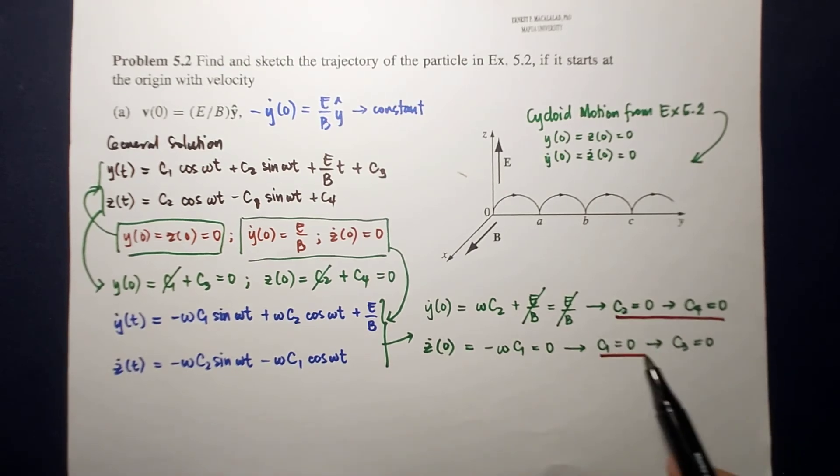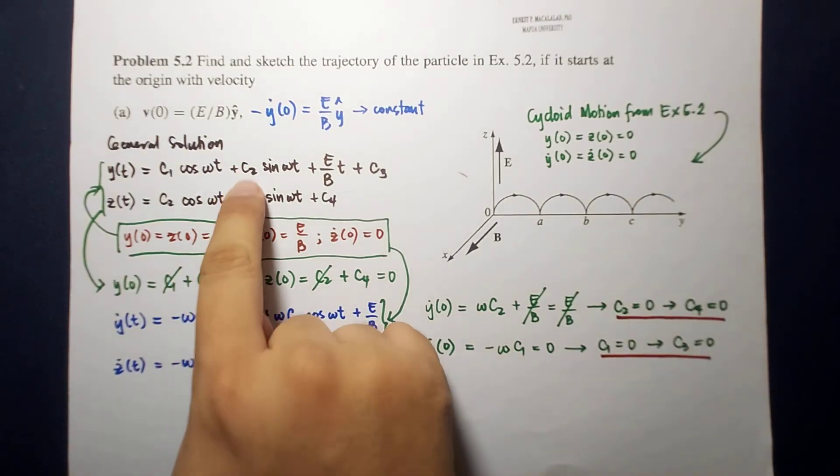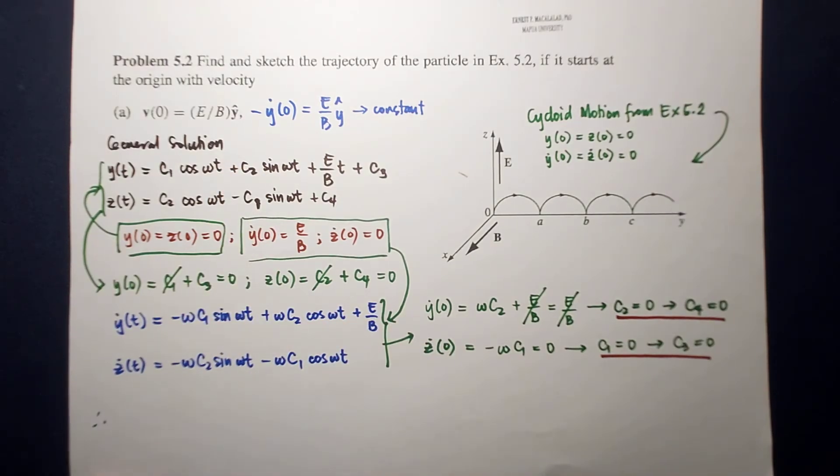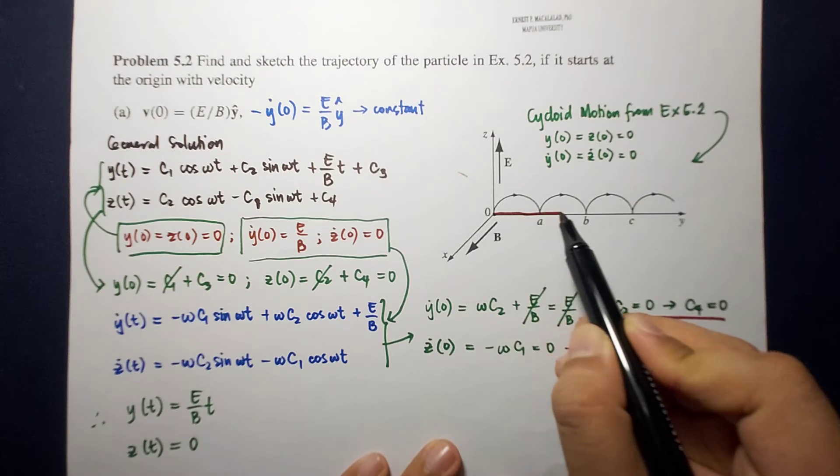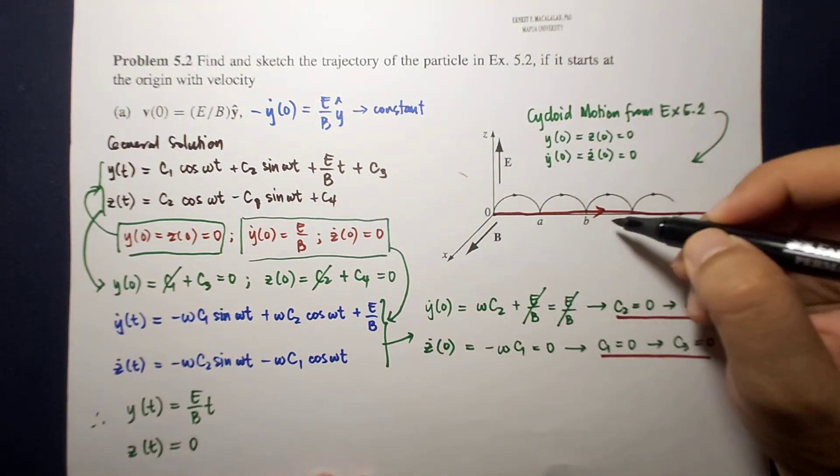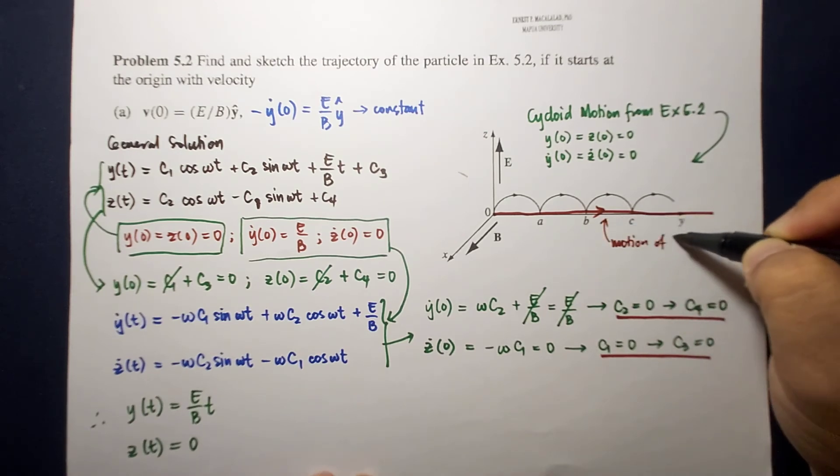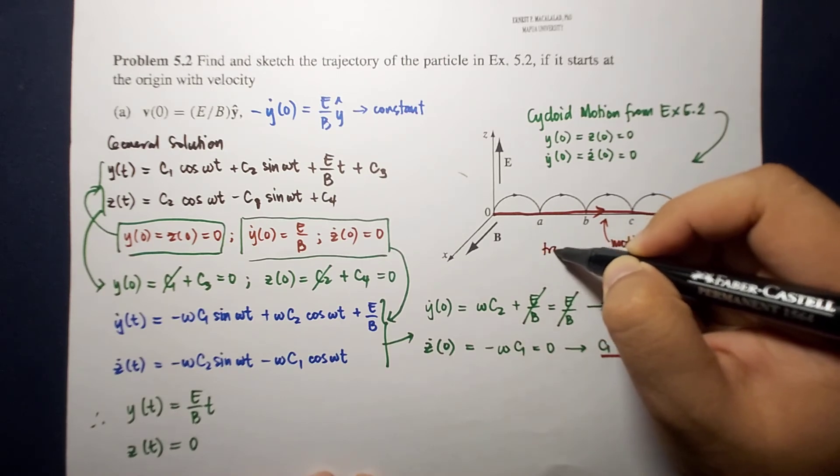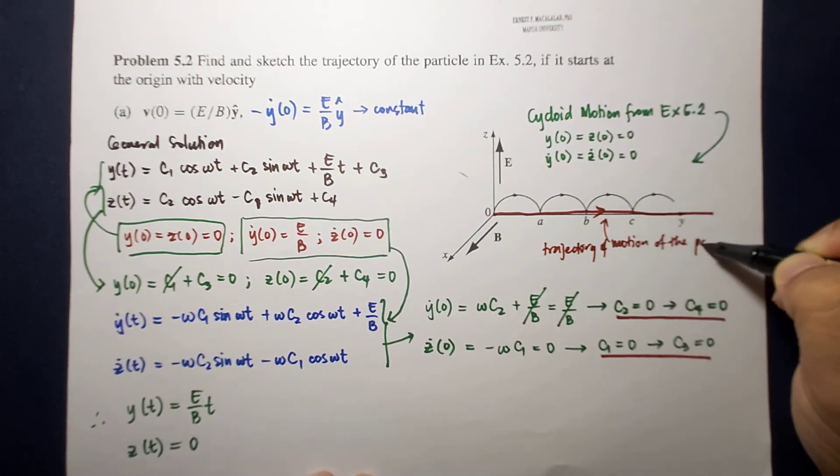So, your result here and your result here, we place it back to the general solution. Therefore, y at time equal to t is now equal to e over b t. And z at time equal to t is equal to 0. So, what does it mean? It means that at any given point in time, the particle stays at the y-axis. If we're going to sketch the graph here, the particle will just move along the y-axis. This is the trajectory of motion of the particle.